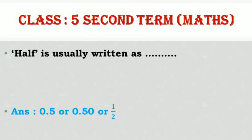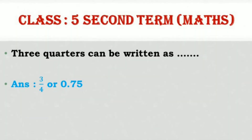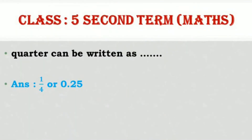Half is usually written as 0.5 or 1/2. Three quarters can be written as 3/4 or 0.75. Quarter can be written as 1/4 or 0.25.